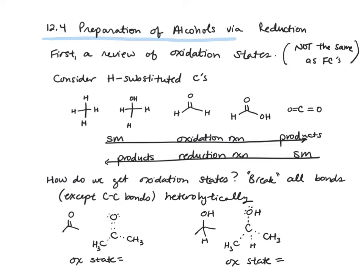In the next section, we have preparation of alcohols via reduction reactions. Before we get into the reactions themselves, we're going to review oxidation states — which, importantly, is not the same as formal charges. Let's consider hydrogen-substituted carbon atoms with various numbers of oxygen atoms attached. With formaldehyde as the central case, we have an oxidation state of zero. Going to the right to carboxylic acid increases the oxidation state by two points, and by two more going to carbon dioxide, whereas going left to an alcohol gives a minus two oxidation state, and methane has an oxidation state of minus four.